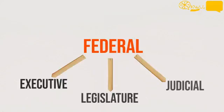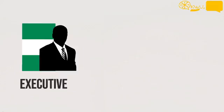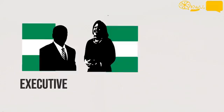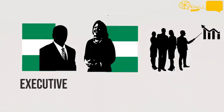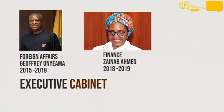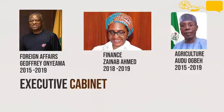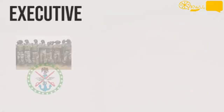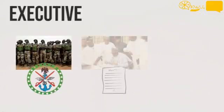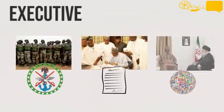The federal government is split into three branches. The executive branch of government is led by the president and the vice president. The president also appoints a cabinet of ministers to assist within a specialized field — for example, there's a Minister of Foreign Affairs, Finance, and Agriculture. Together, their powers include the control of the armed forces, proposing bills, and representing the country internationally.